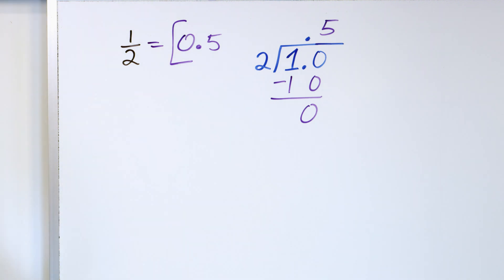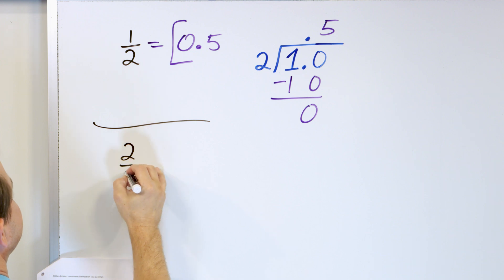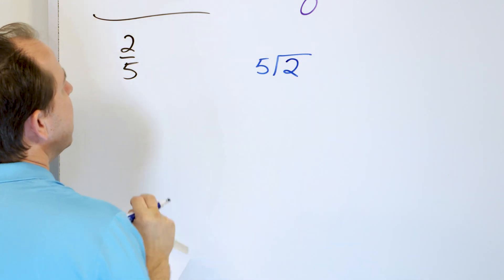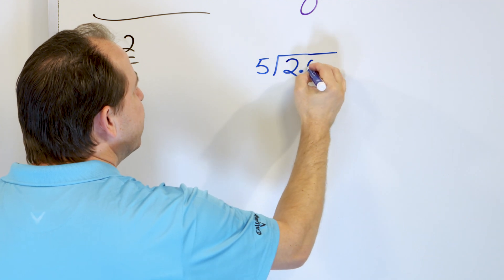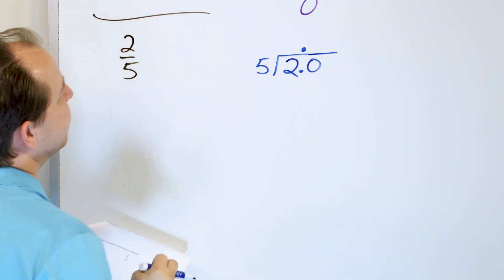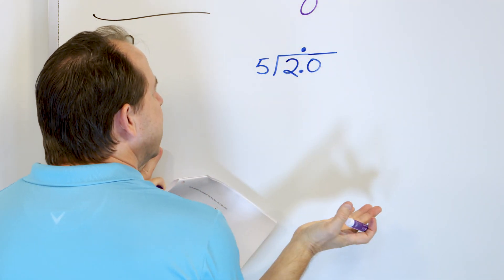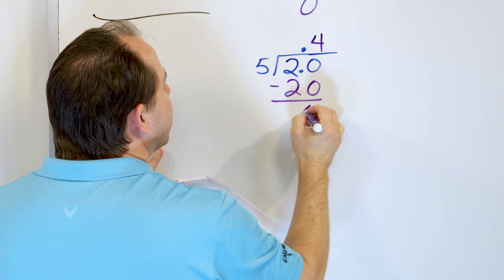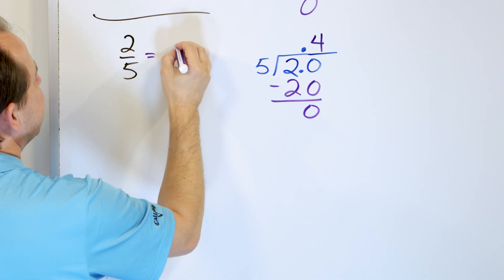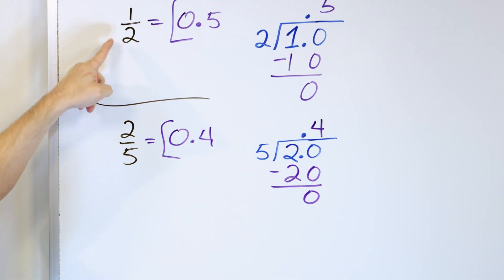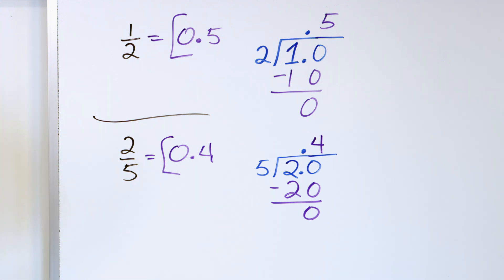We're going to calculate the decimals corresponding to various fractions. Let's look at two fifths. We take the numerator 2 and divide by 5. We can't do this directly, so we make it 2.0 and put the decimal above. Ignoring the decimal, 5 times 4 is 20, so we subtract and get a remainder of zero. So two fifths is 0.4. When you enter 2 divided by 5 in a calculator, you get 0.4.